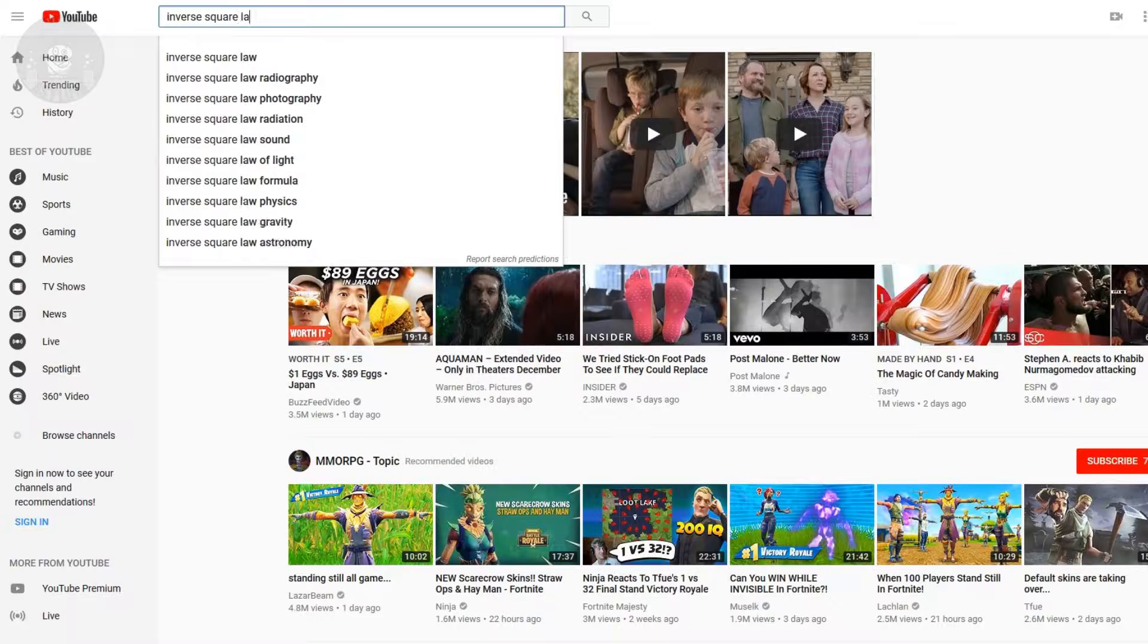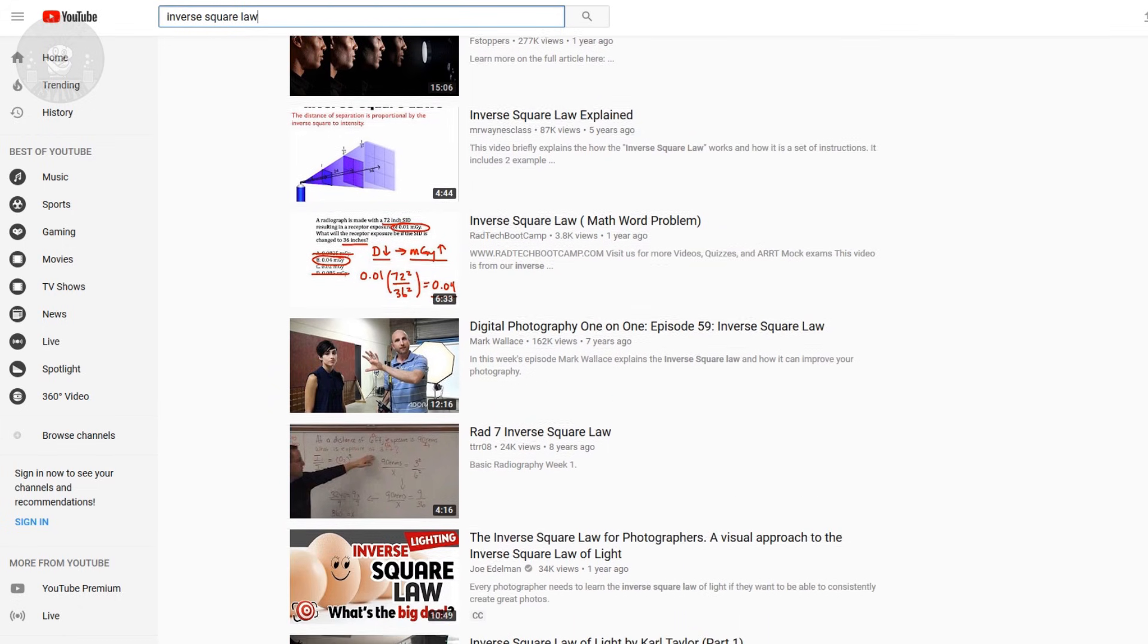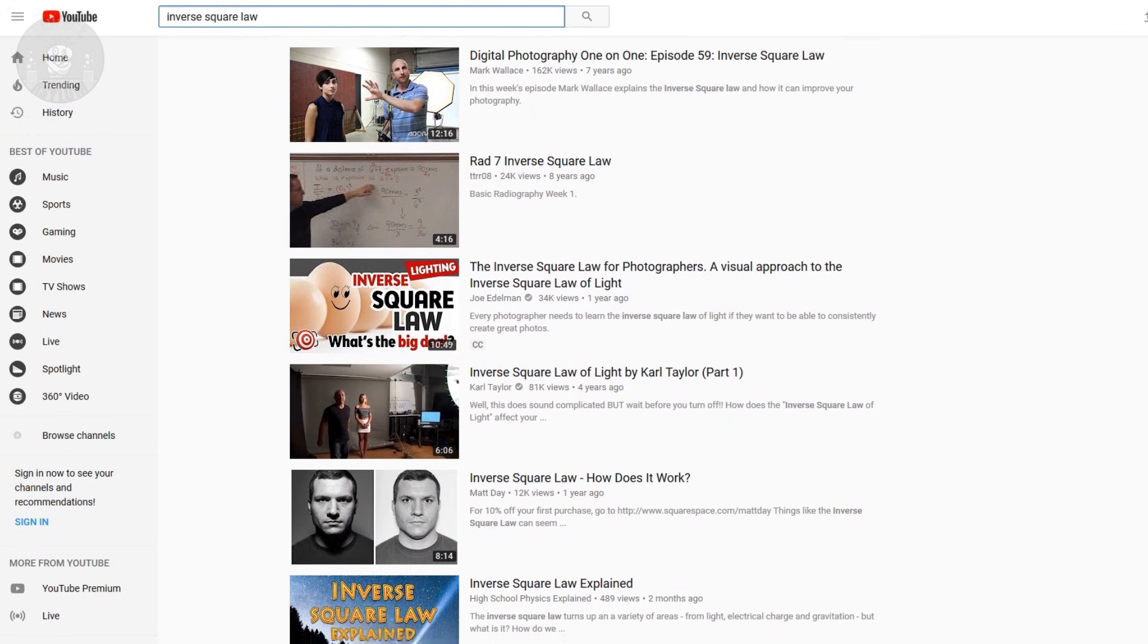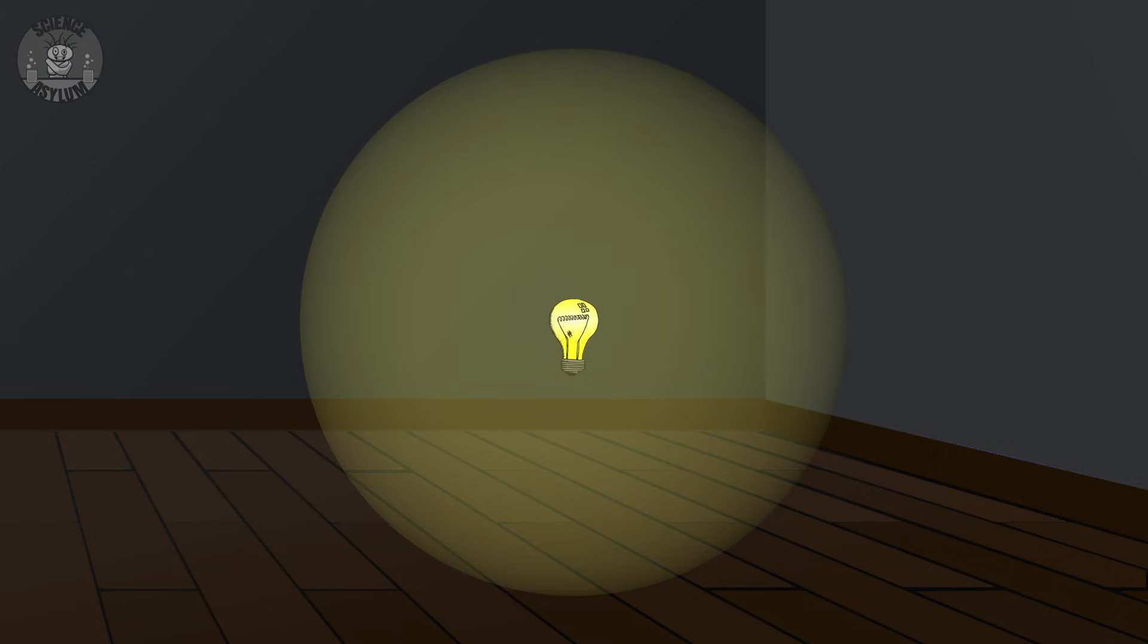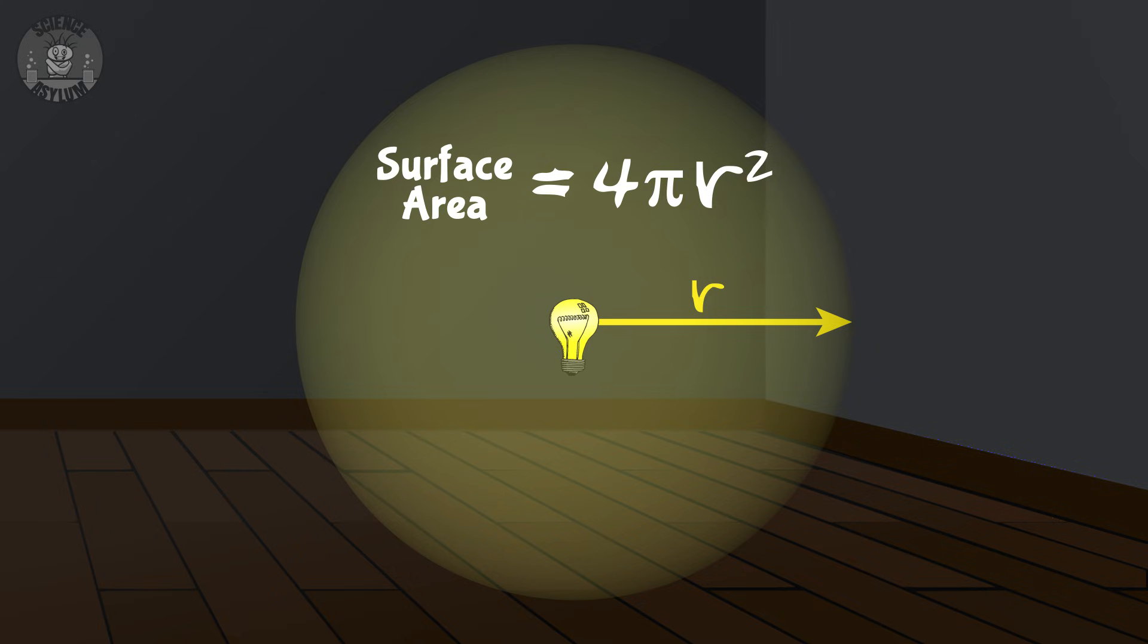It's actually pretty relevant for studio lighting, which is why half the videos that come up when you search inverse square law are lighting tutorials. Anyway, Kepler used the idea of this spherical shell to come up with a rule for how much light dims as it moves outward. Since the light was spread over the area of the shell and that area is 4πr², the brightness of the light should drop off like 1 over r², the inverse square of the distance. That's why it's called an inverse square law.